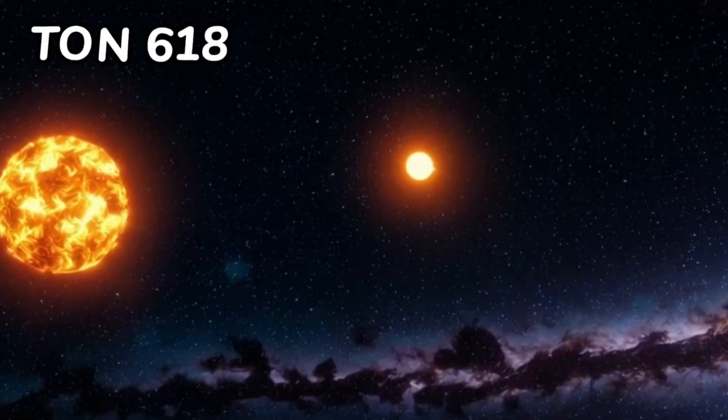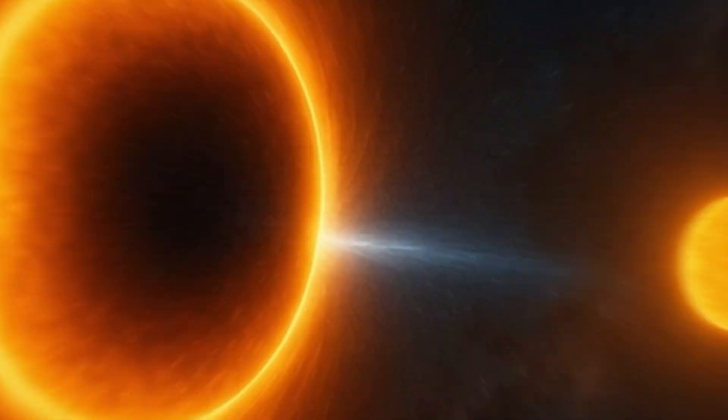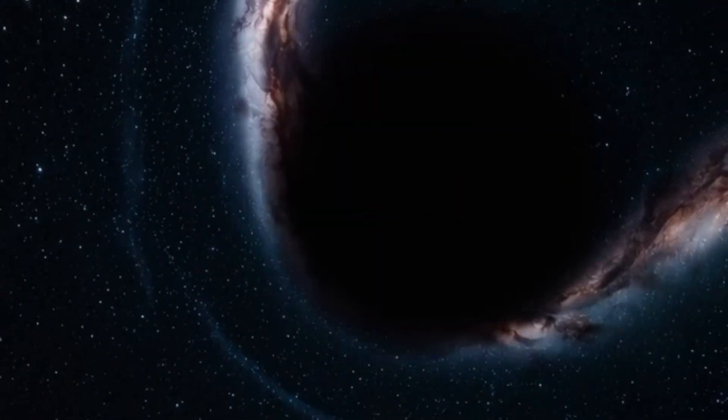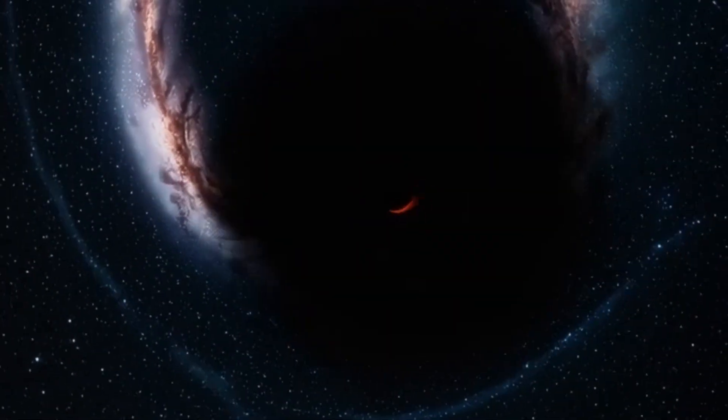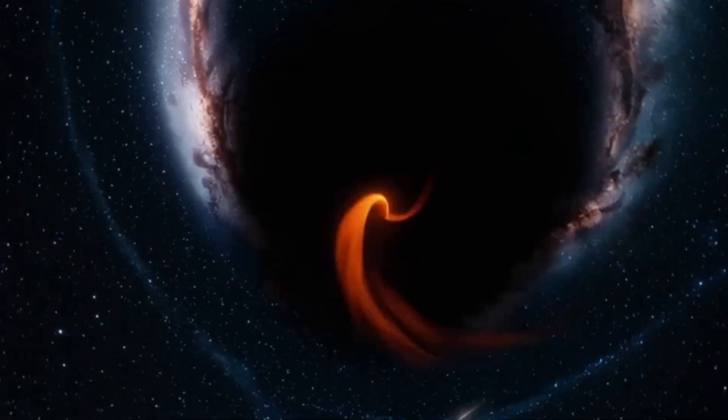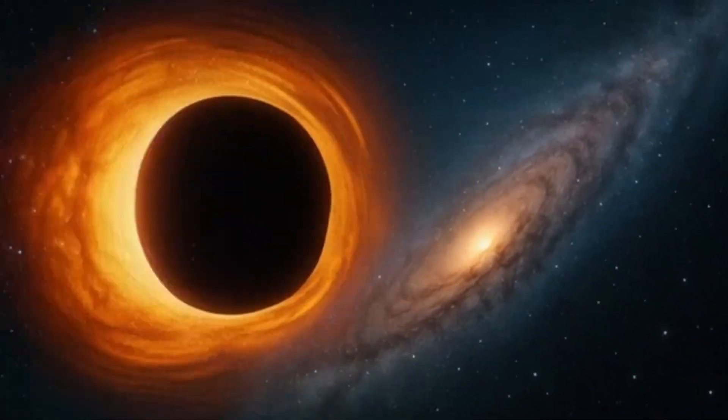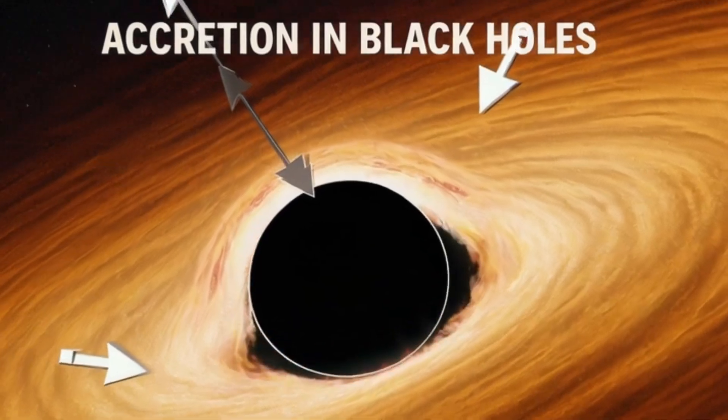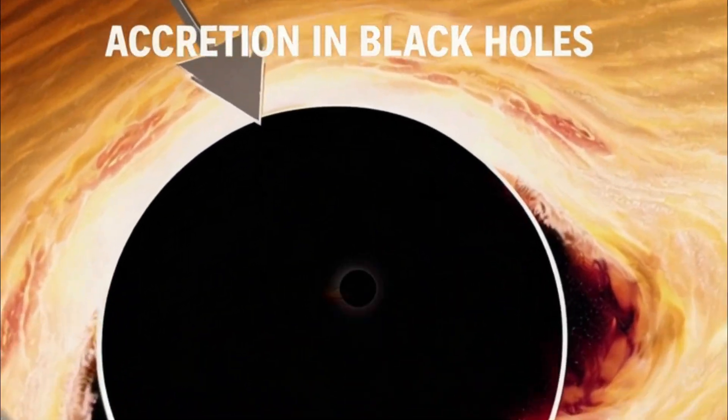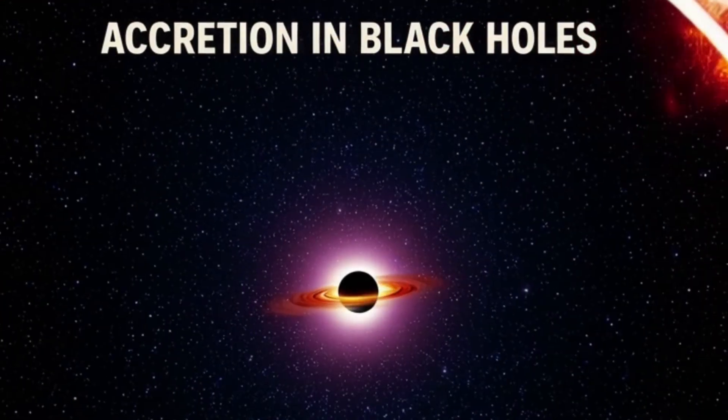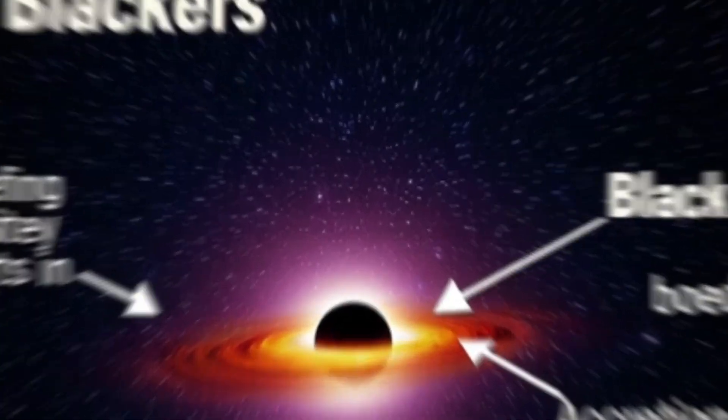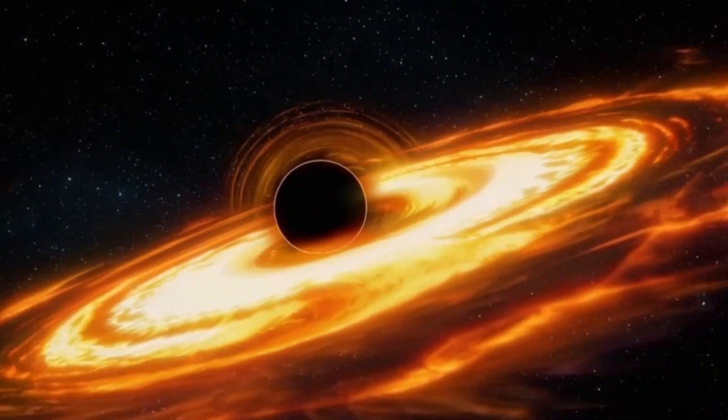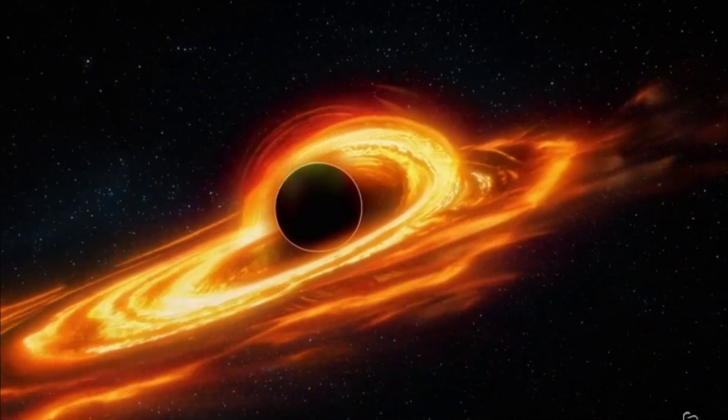TON618 doesn't just bend space, it bends logic. It challenges the Eddington limit, a rule that defines how fast a black hole can grow. If a black hole feeds too fast, its radiation should push matter away. But TON618 defies this. It seems to have eaten faster than it should be allowed. It's like finding a toddler who weighs more than a tank. Something doesn't add up.